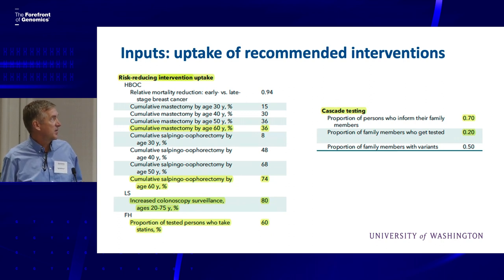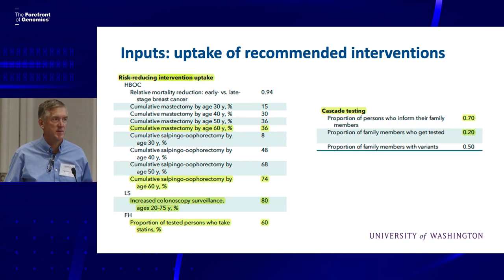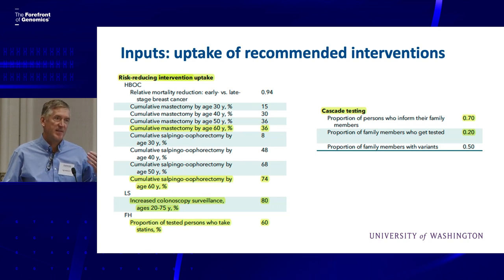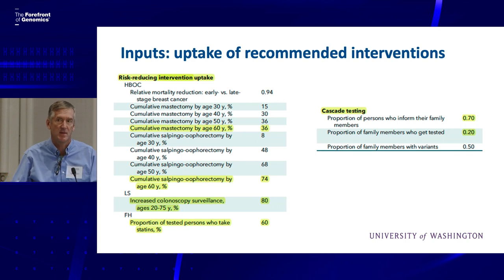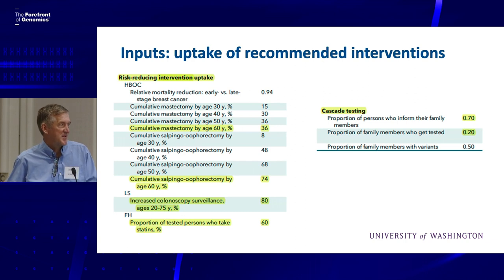We did not assume that people just did what the recommendation was — that's not what happens in the real world. For HBOC, women make decisions about mastectomy and oophorectomy and implement those interventions over time at different ages. Some previous work in the field just assumed that everybody goes and gets that intervention, which is unrealistic. One of the most important things in these models is how do people behave — what's the uptake of the intervention? We also built a sub-model looking at within-family cascade testing and its impacts, with pretty modest assumptions about how many people would pursue that.